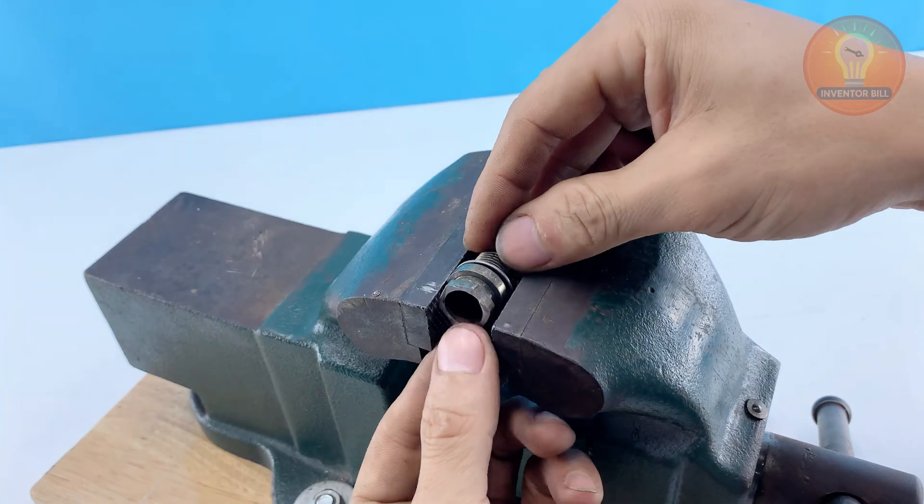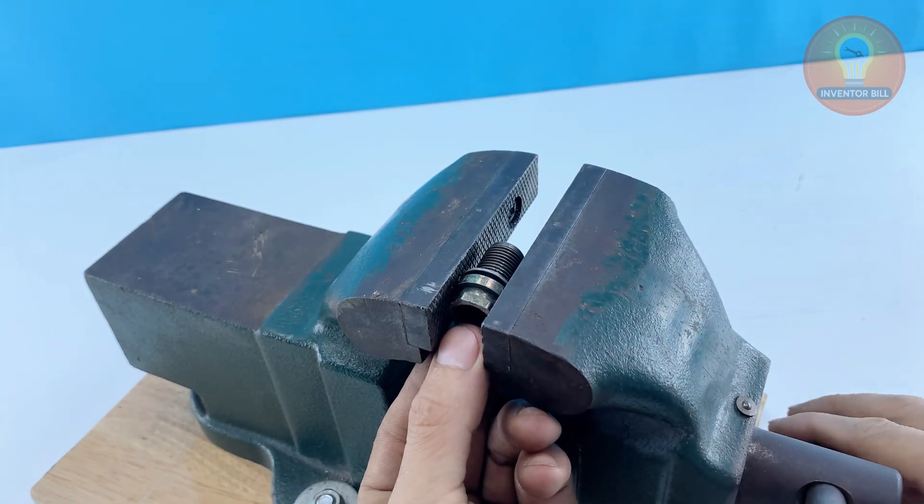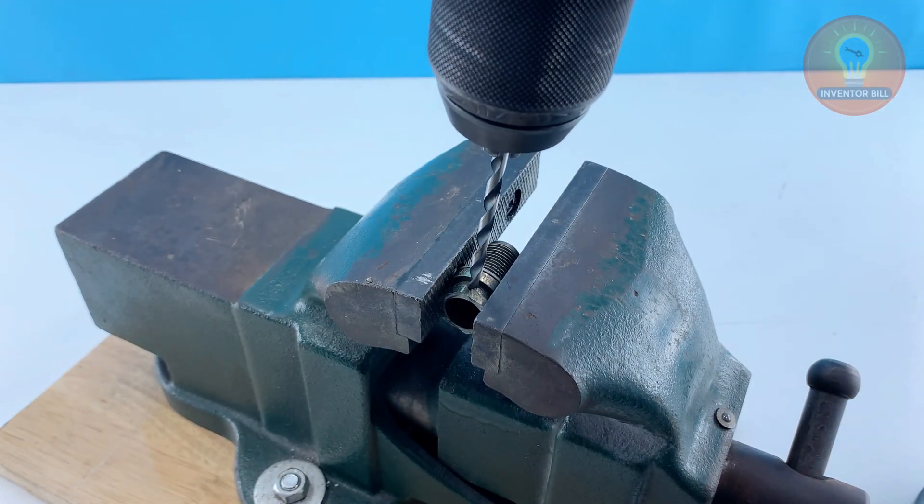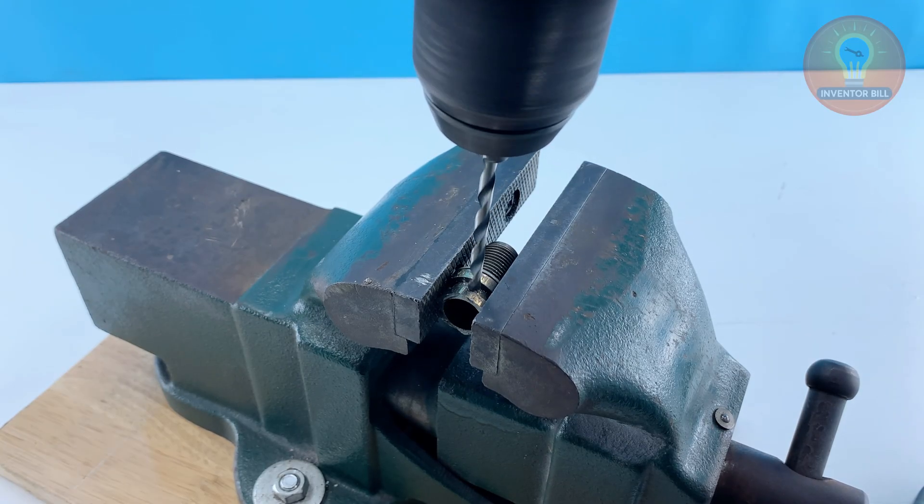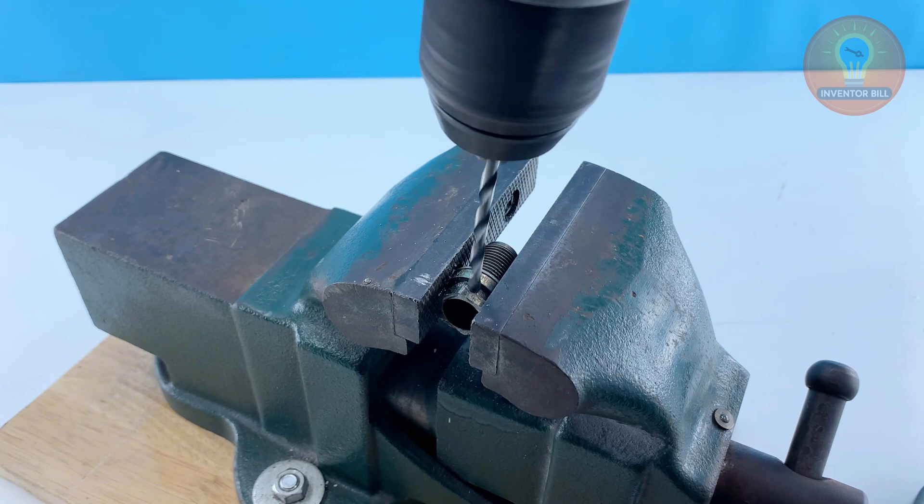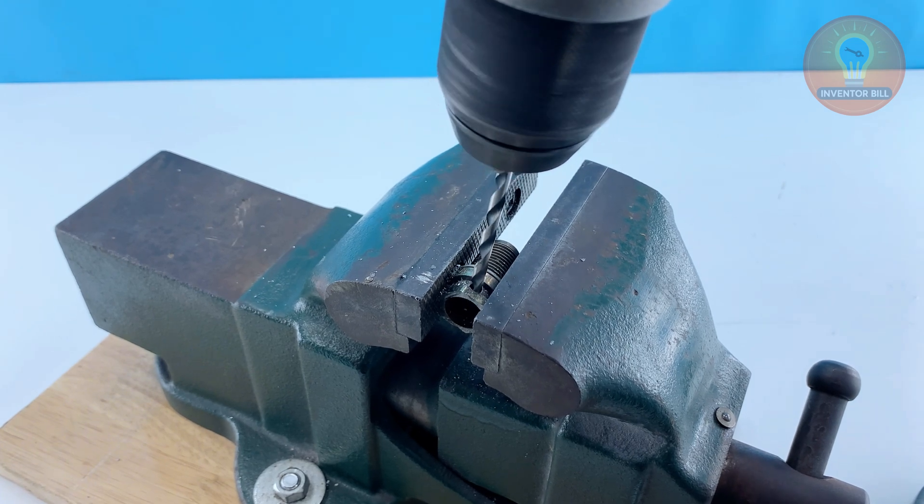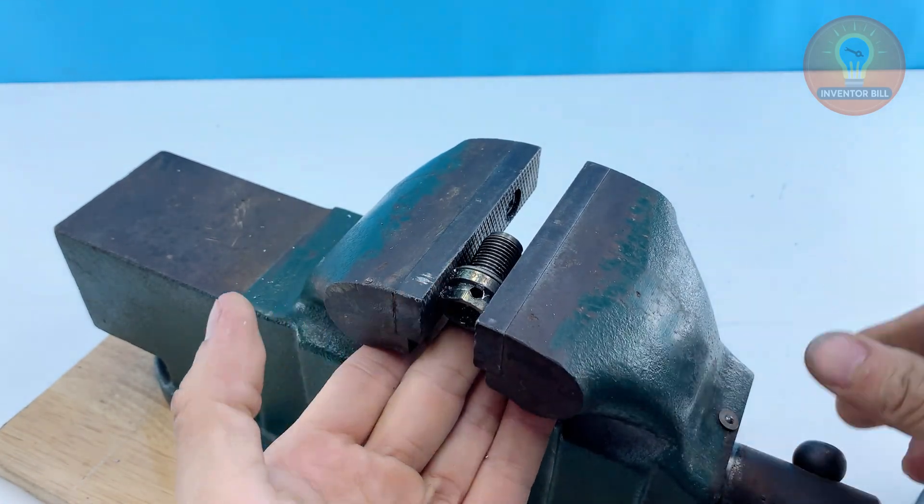Once the hole is clear, take the metal shell you removed earlier and drill a small hole through its side. This hole will be used later for attaching a screw and connecting your power wire.